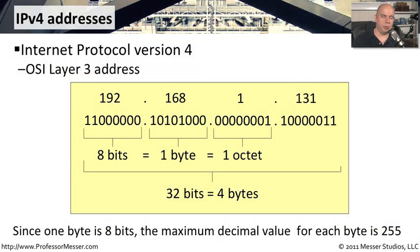There's two types of IP addresses you would expect to see when you're looking at the configuration of your workstation or the configuration of your router. And the two types of addresses are IPv4 and IPv6.